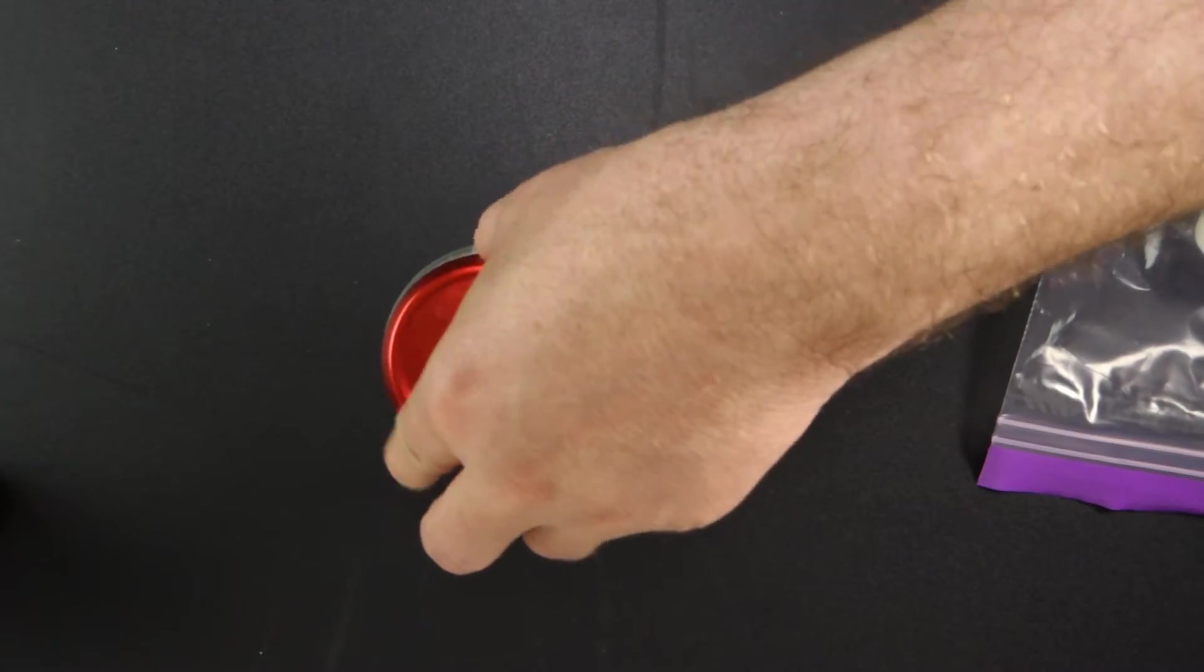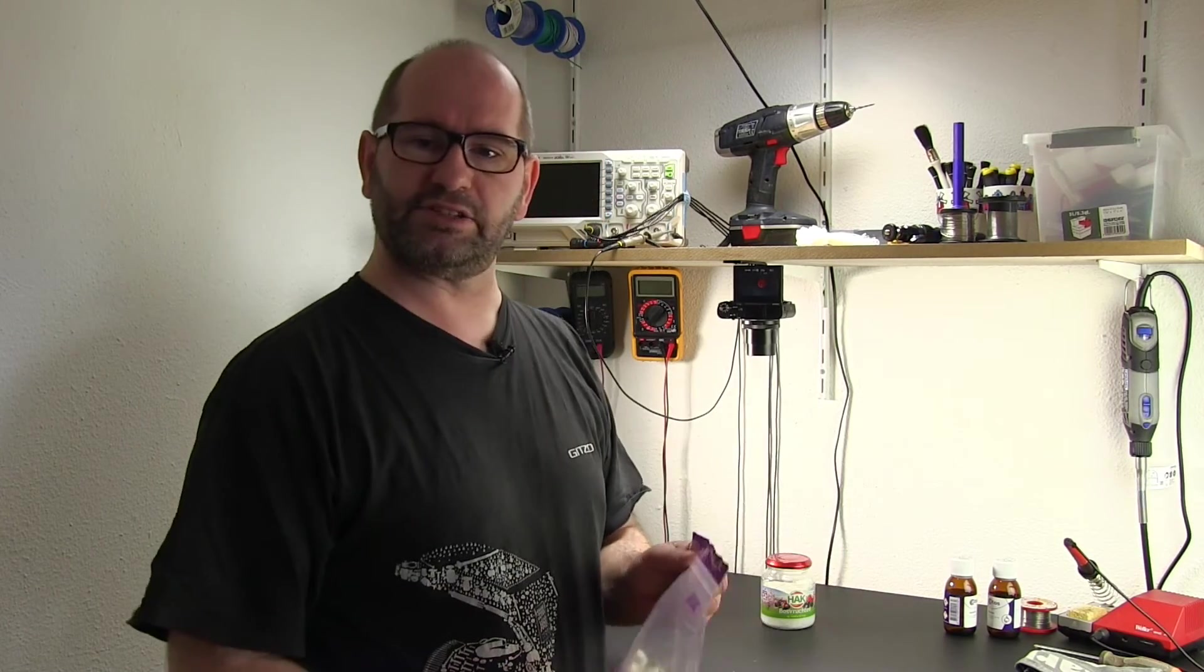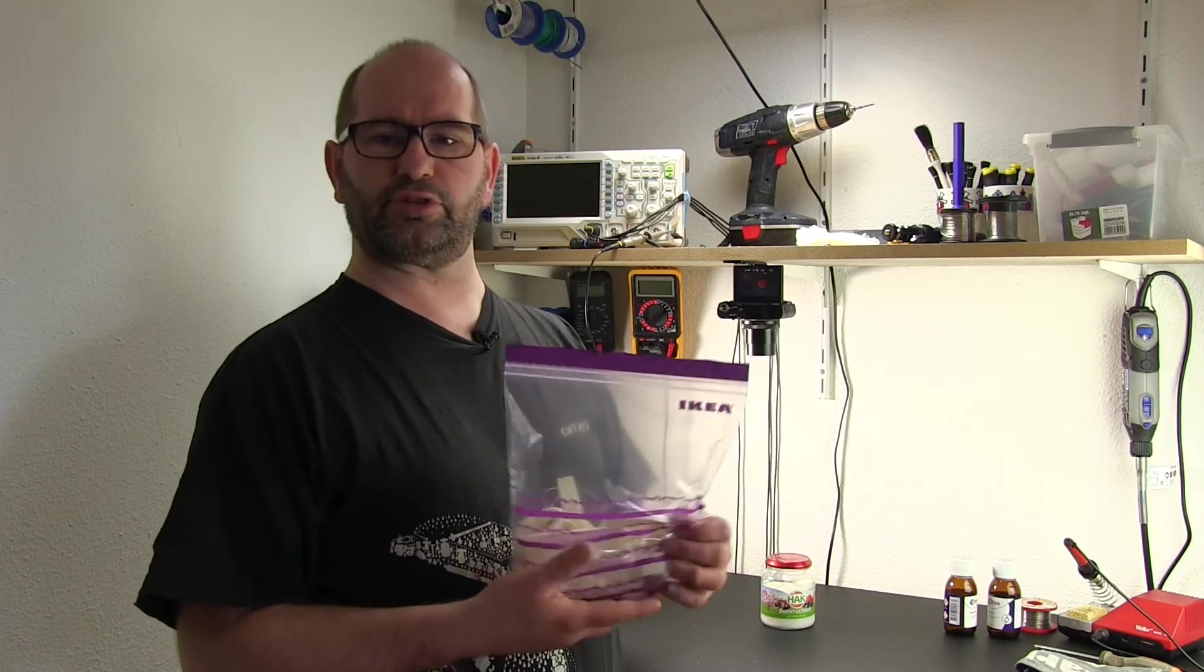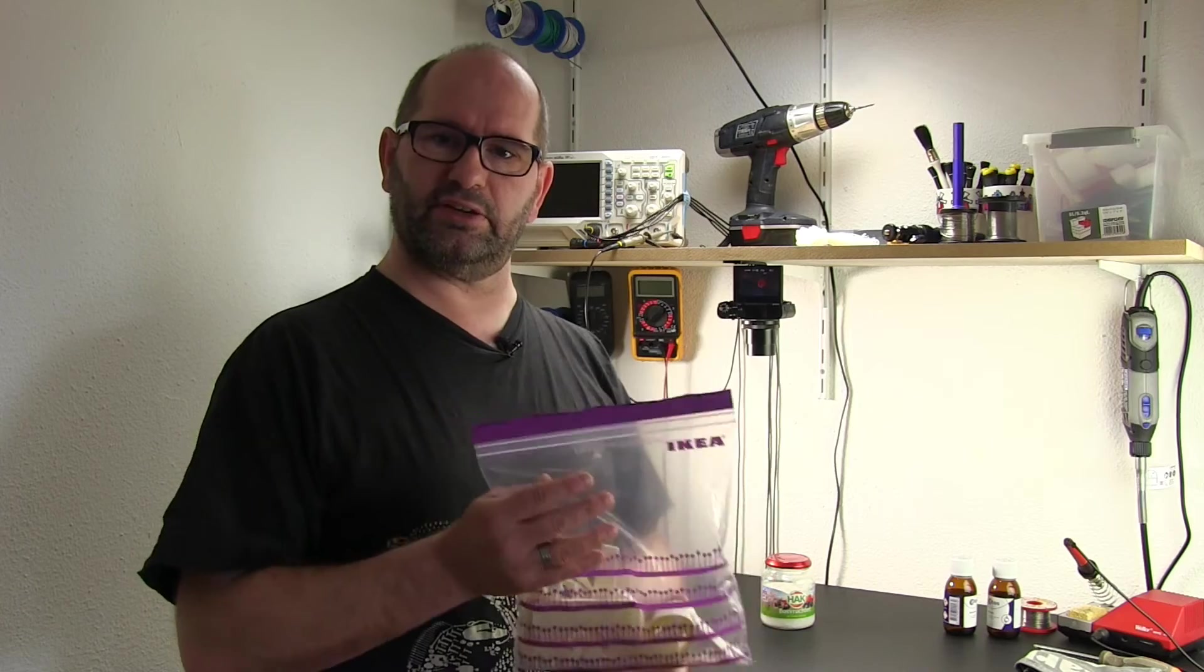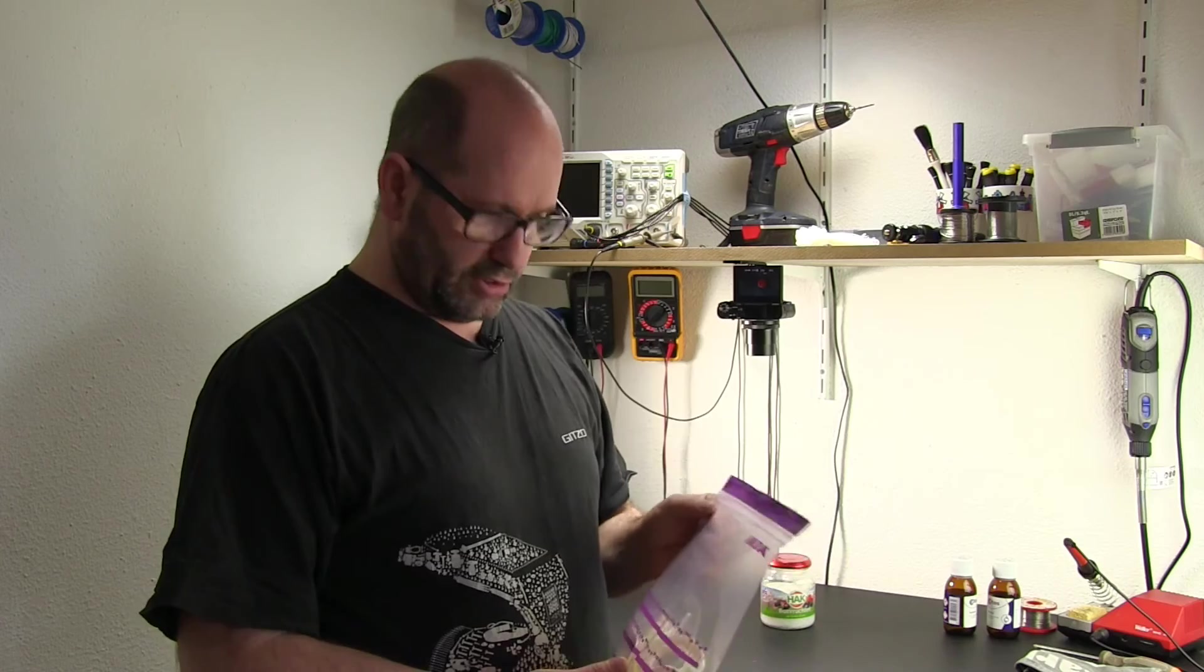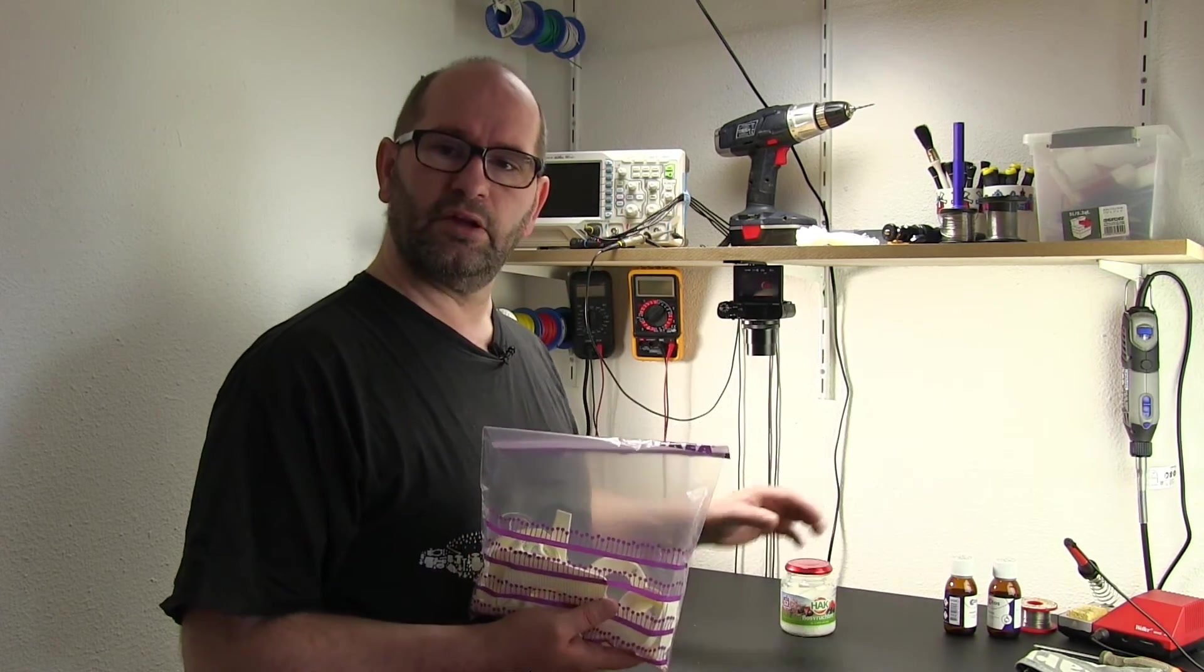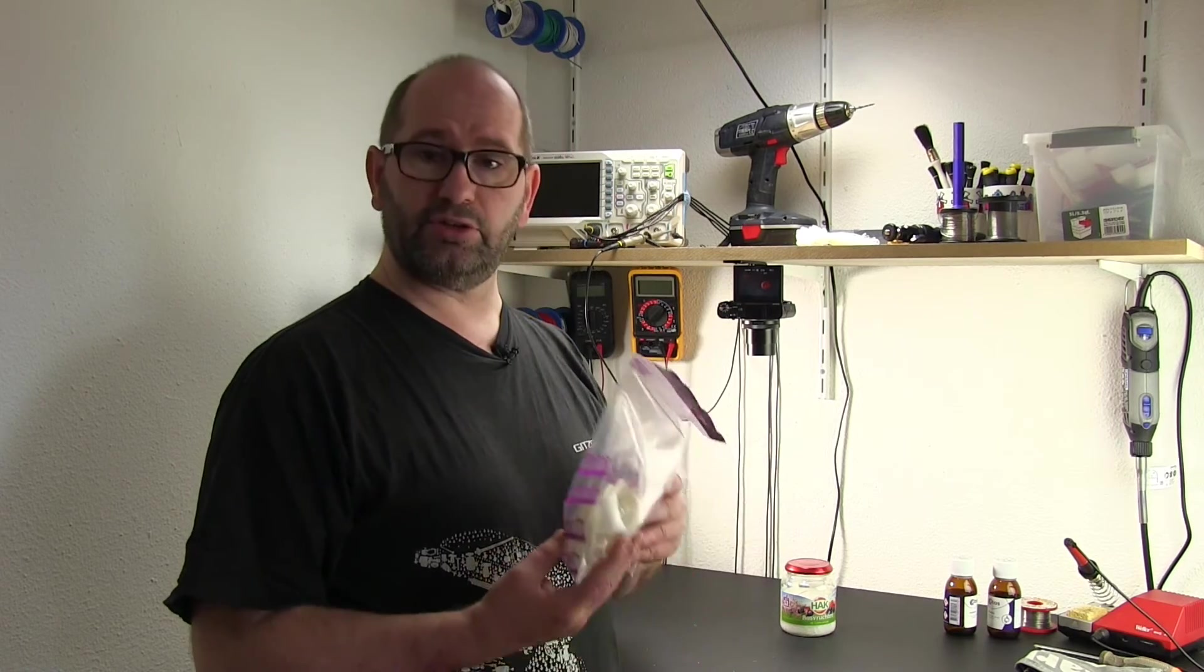Most of the time when I print with ABS, things go wrong or I have infill or support structures left over. I collect these in a ziplock bag for later use. I always make a jar of slurry from the same material I'm printing with. You can do a lot of things with this.